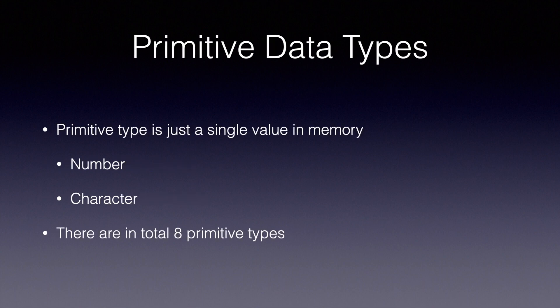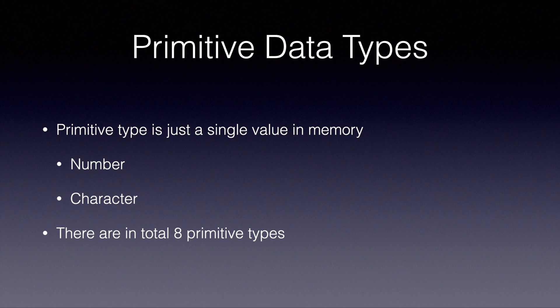A primitive type is just a single value stored in memory. For example, if we store the number 500 into a variable called i, then that i is considered to be a primitive. There are in total eight primitive types. We will look into the slide later on, but before we move on to the slide I just want to reiterate the way a variable is declared and initialized.